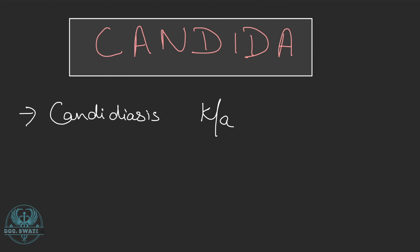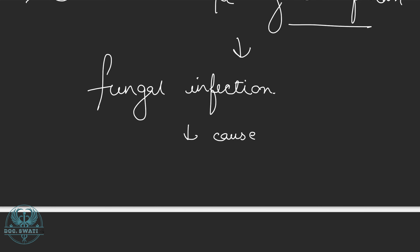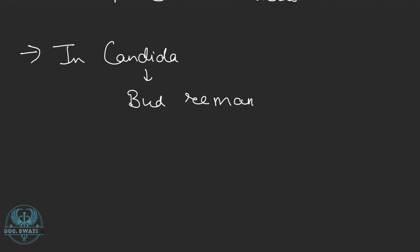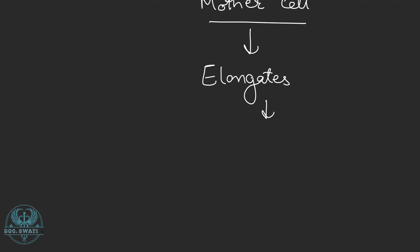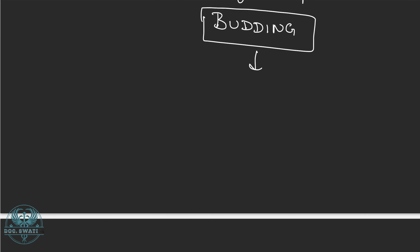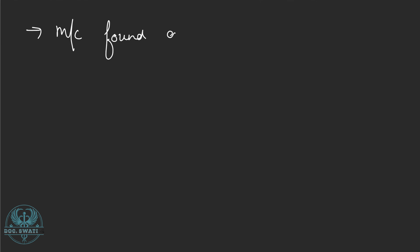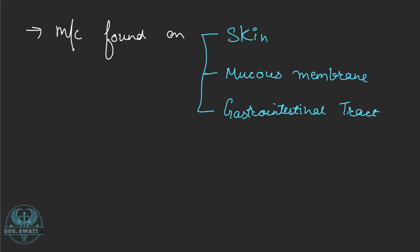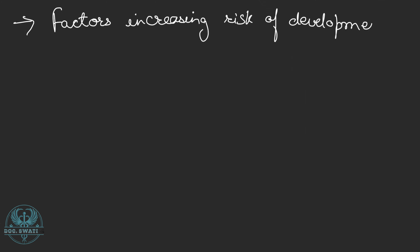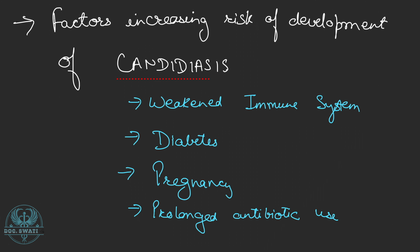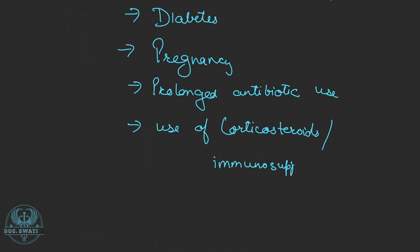Candidiasis, also known as a yeast infection, is a fungal infection caused by the overgrowth of Candida species, primarily Candida albicans. In Candida, the bud remains attached to the mother cell, elongates, and undergoes repeated budding to form chains of elongated cells known as pseudohyphae. Candida is commonly found on the skin, mucous membranes, and gastrointestinal tract of healthy individuals. However, under certain conditions it can multiply excessively, leading to infection. Risk factors include weakened immune system, diabetes, pregnancy, prolonged antibiotic use, use of corticosteroids or immunosuppressive medications, and poor hygiene.